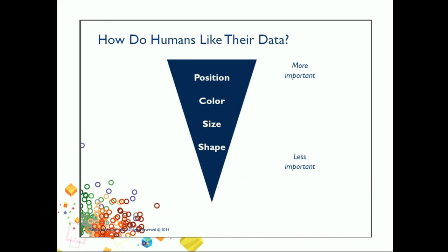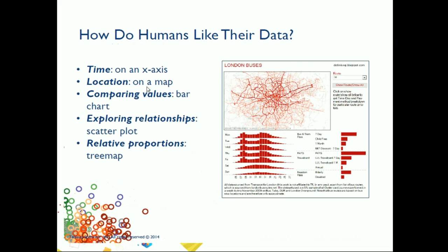Time should be on the x-axis. Location should always be on a map — whenever you want to deal with anything related to location, city, or zip code, it is best to do it on a map. Comparing values should be on a bar chart. Relationships should be on a scatter plot. Proportions — one against the other — are best presented on a tree map. These are just best practices that will help anybody analyze faster; the choice is entirely yours.